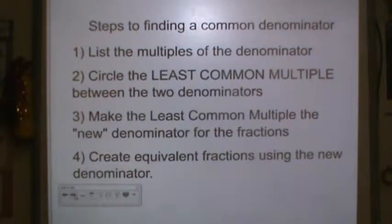First you list the multiples of the denominator for both fractions. You circle the least common multiple that the fractions share. You make the least common multiple the new denominator for the fractions and then you create equivalent fractions by using that new denominator that you created.